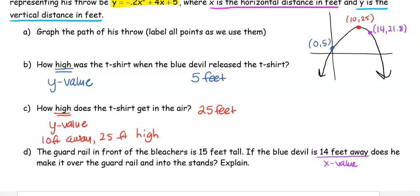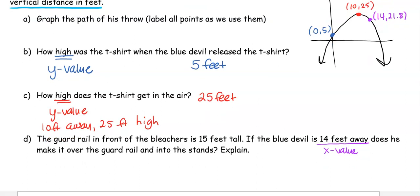At this point, would the Blue Devil make the t-shirt over the guard rail? Remember, the guard rail is 15 feet tall, and at that point our t-shirt is 21.8 feet tall. So yes, it's well over that guard rail. When you answer this question, make sure your explanation is clear and tell me which numbers you compared, because there's a lot of numbers going on.